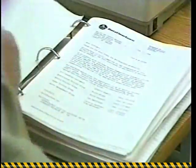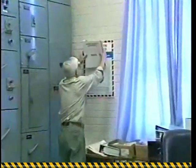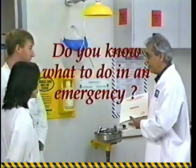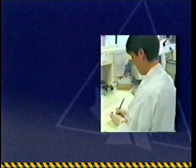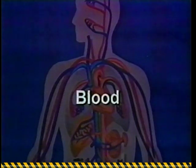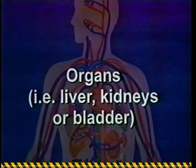It is important to read the MSDS before you start working with any hazardous material. It provides information about how the hazardous material can enter the body, its potential health effects, and first aid information so you can promptly respond in an emergency. A hazardous material can be toxic, but may not harm your health if it doesn't enter your body. If the substance does get into your body, there are four main sites where disease or damage can occur: at the site of entry such as the lungs or skin; in the blood; in the central nervous system, reproductive system, or digestive system; and in organs such as the liver, kidney, and bladder.